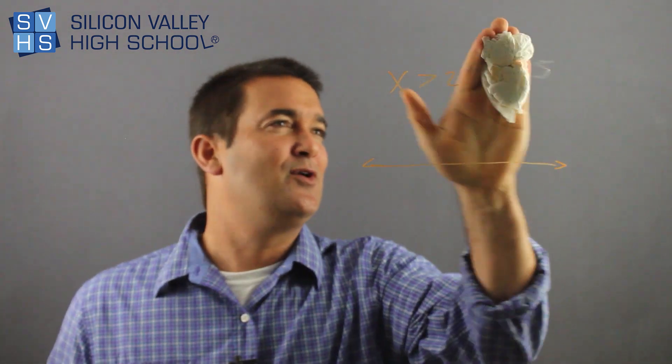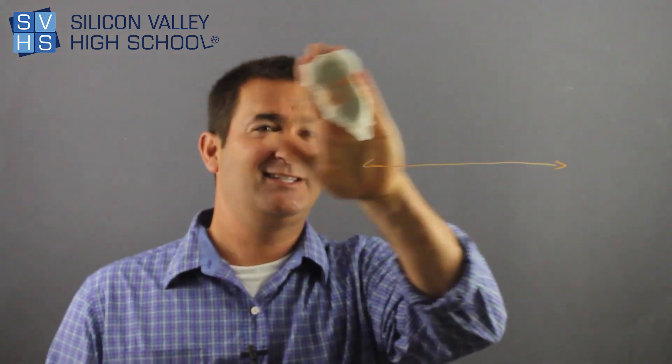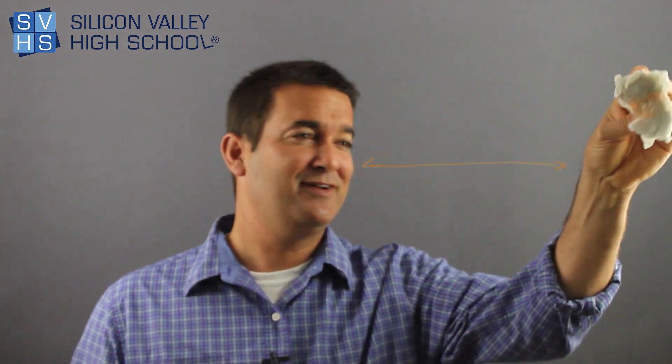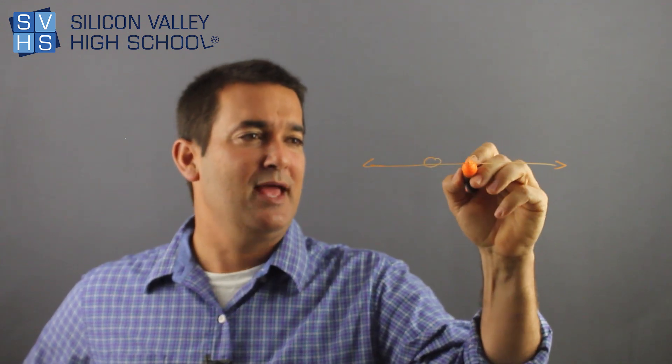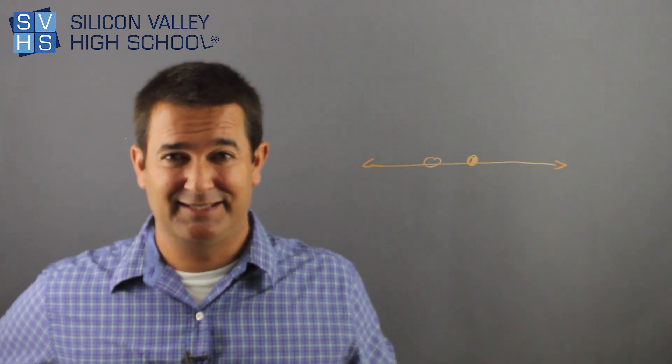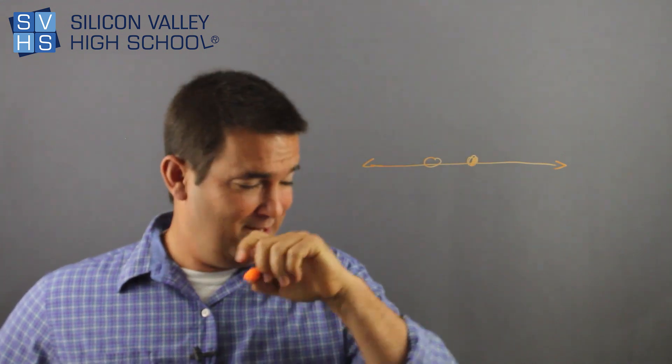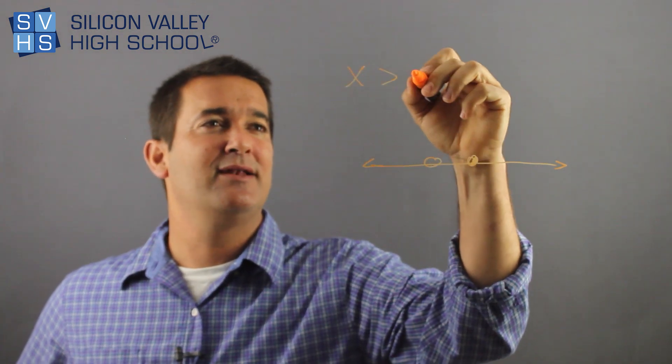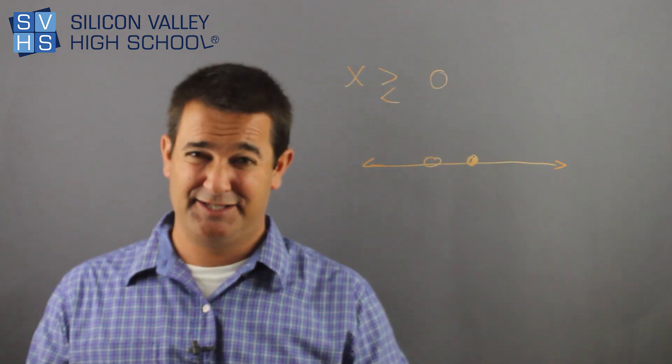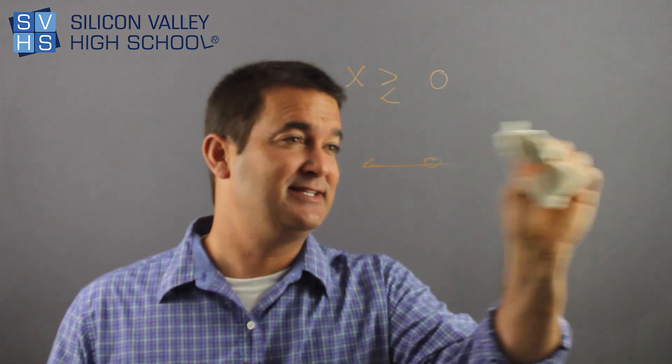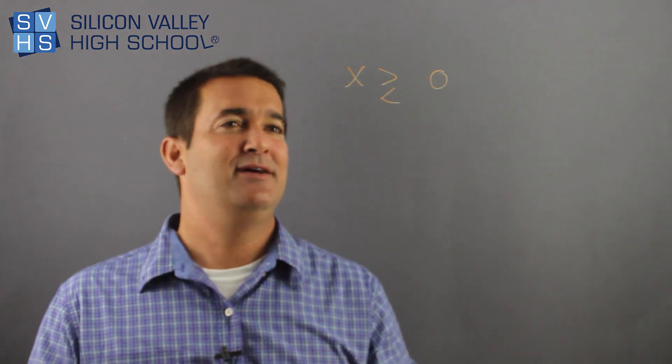The first thing you have to know going into this whole game of inequalities, this whole world, this underworld of inequalities, is that there's such a thing as an open dot and a closed dot, right? Here's the rule: if you have a number that is greater than or less than, it is an open dot. That's just a rule. It means not including, it means it does not include that number.